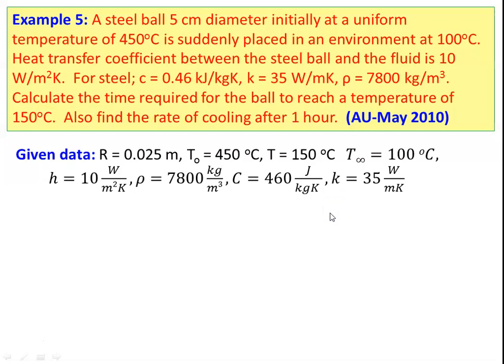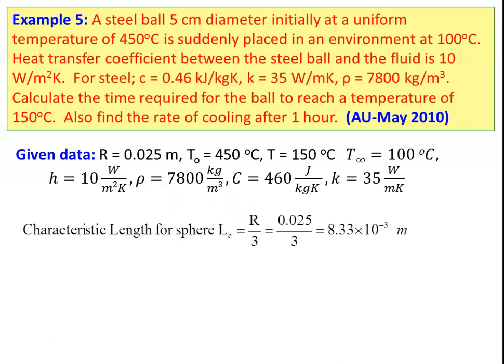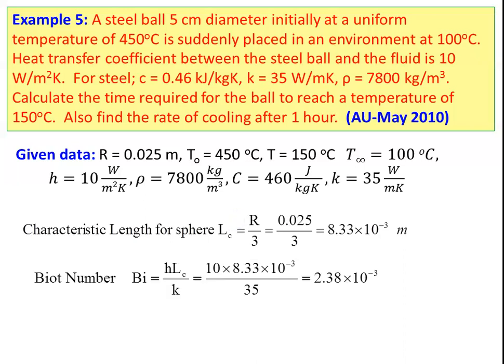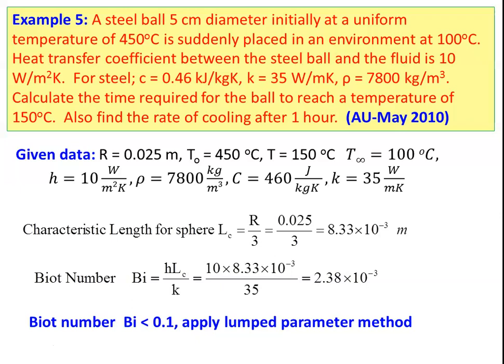Given data: radius of the steel ball equals 0.025 meter, initial temperature 450 degree Celsius, temperature of the ball equals 150 degree Celsius, fluid temperature 100 degree Celsius, heat transfer coefficient 10 watts per meter square kelvin, density 7800, specific heat 460, thermal conductivity 35. As usual, calculate the characteristic length for a sphere: LC equals R by 3, which is 0.025 divided by 3, equal to 8.33 × 10⁻³ meter. Biot number equals H·LC divided by K: 10 into 8.33 × 10⁻³ divided by 35 equals 2.38 × 10⁻³. This Biot number is very much lower than 0.1, so we can apply the lumped parameter method.